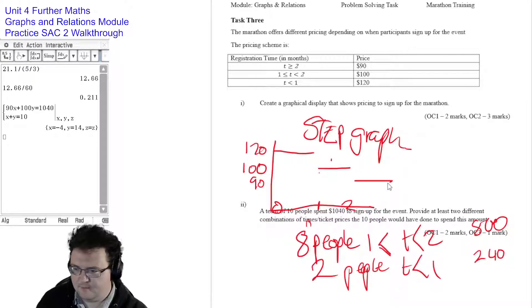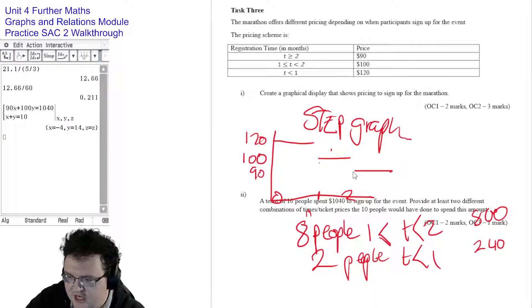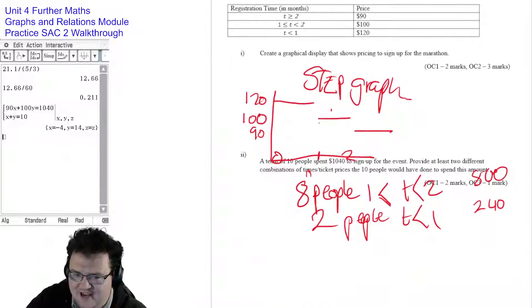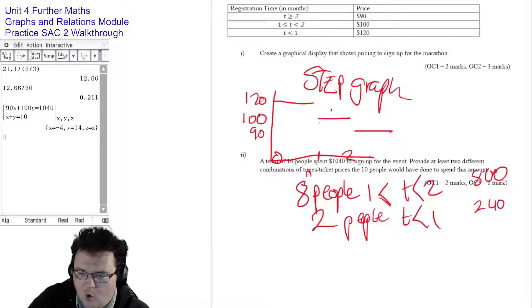So you'd have a step graph that looks like that. The next question, team of 10 people spent 10.40 to sign up for the event. Provide at least two different combinations of times and ticket prices. Now, I've spent a bit of time doing it and I can only get fractional answers or ones that involve negative amounts of people. This is the only one that makes sense. It's 8 people between 1 and 2 months and then 2 people less than a month gets you exactly 10.40.